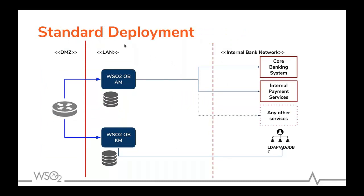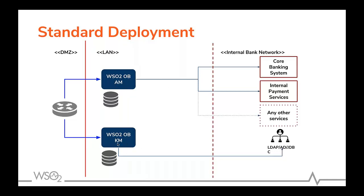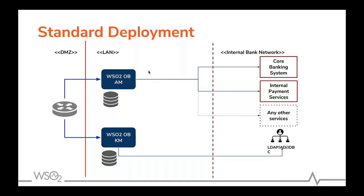With the new changes, our standard deployment contains only two components: the Open Banking API Manager and the Open Banking Key Manager. These two components are required for a standard deployment. The API Manager provides the gateway component and can integrate with core banking systems and internal services to provide the required data to the outside.